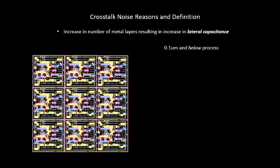So the number of standard cells got increased, the number of connections got increased — each standard cell has to be connected to its adjacent standard cells — and as a result, the number of routes got increased. Now how do you accommodate that increasing number of routes in the same area? Previously the routes were spaced far apart, but in this case the routes are placed very close to each other. So how do I take care of this?